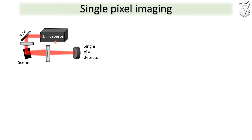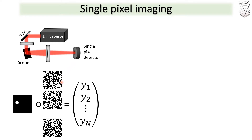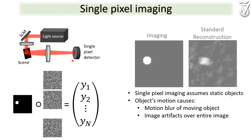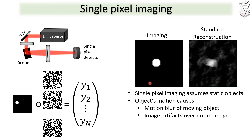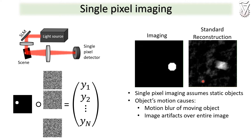In single-pixel imaging, a single detector is used to capture an entire scene. This is achieved by illuminating the scene with different spatial patterns and collecting the reflected light with the detector. However, in case of motion, the reconstructed images suffer from both blur and motion artefacts.